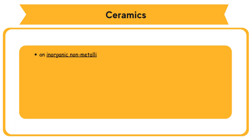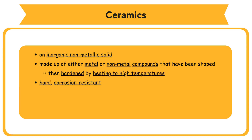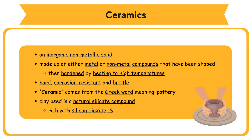A ceramic is an inorganic non-metallic solid, made up of either metal or non-metal compounds, that have been shaped and then hardened by heating to high temperatures. In general, they are hard, corrosion-resistant, and brittle. Ceramic comes from the Greek word meaning pottery. The clay used in making ceramics pottery is a natural silicate compound rich with silicon dioxide, SiO₂.